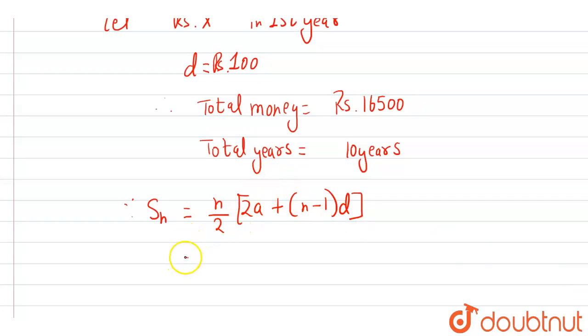Substituting the values where n = 10: (10/2)[2x + (10-1)(100)] = 5[2x + 9(100)].